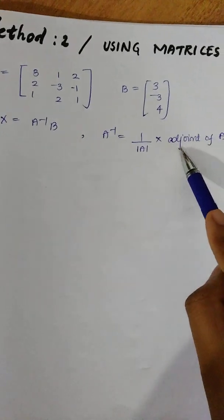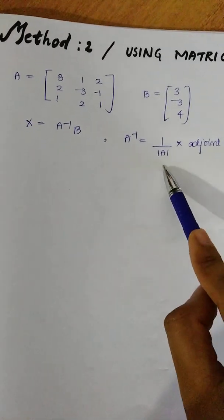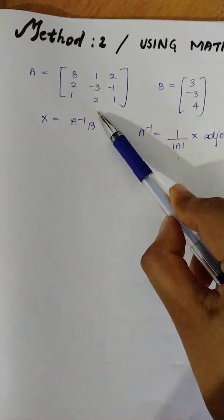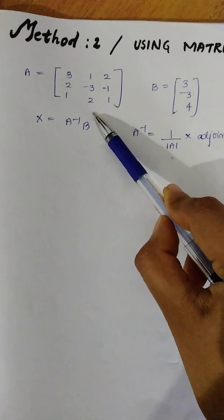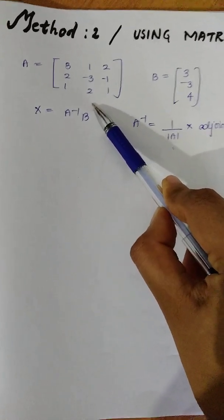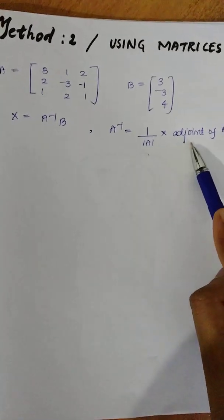We need the adjoint of A and the determinant of A. This is the value of A. Adjoint of A.